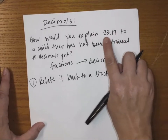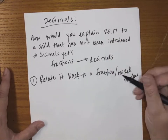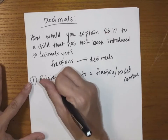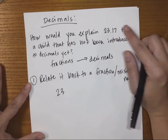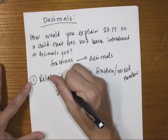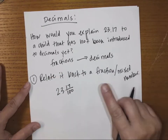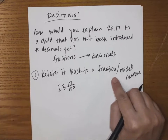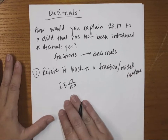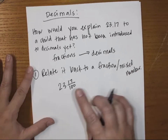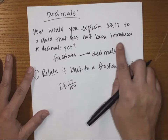So the number 23.17 — the way I would relate that back to a fraction or mixed number is 23 wholes and 17, which is in the hundredths place. So 23 and 17 hundredths. You could also write that as an improper fraction: 2317 over 100. That's the first thing — we can write fractions with a denominator of ten, a hundred, or a thousand as a decimal.